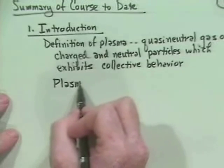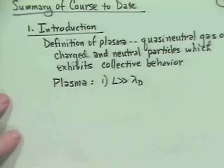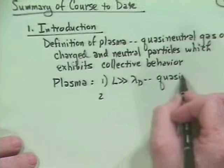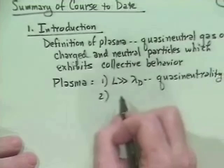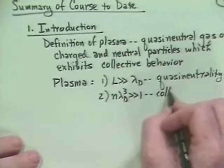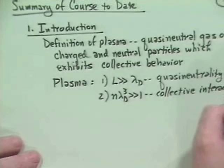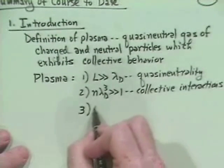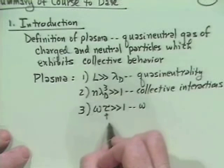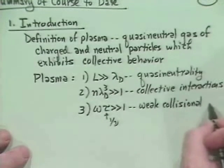We had as criteria for the existence of a plasma that, in fact, we had to have first that the system was very large compared to the Debye length, at least in bulk, so that we could have quasi-neutrality. Secondly, we had to have a large number of particles in a Debye sphere, and this is basically for collective interactions. A third criterion we had was that omega tau be much greater than 1, and this meant weak collisional effects compared to collective effects.